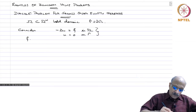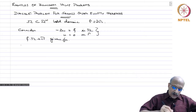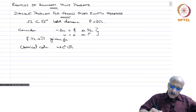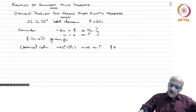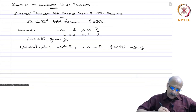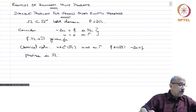f is a given function from omega to R. A classical solution means u in C^2 of omega-bar, u equal to 0 on gamma, f in C of omega-bar, and minus Laplacian u equals f pointwise in omega.